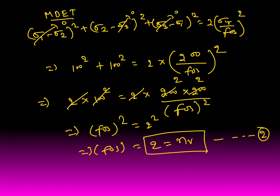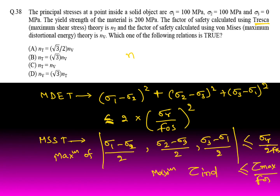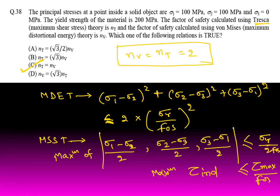From both calculations, Nt = 2 and Nb = 2, so Nt = Nb. The answer is option C. This concludes Set 1. Strength of Materials, Machine Design, and Engineering Mechanics together carry around 3 to 5 marks in GATE. Thank you friends for watching my video.